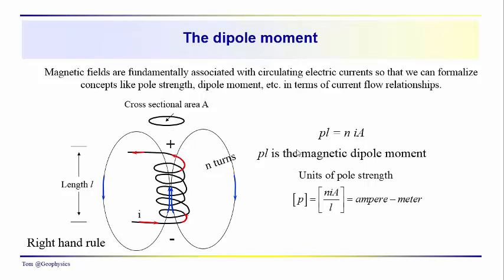So if we divide both sides by L, we get P is basically equal to NIA over L, and the units of length cancel out, so we have units for the pole strength of ampere meter. This would be a standard international, or SI, unit of measure. We'll refer to both standard international and CGS units, mainly CGS units.